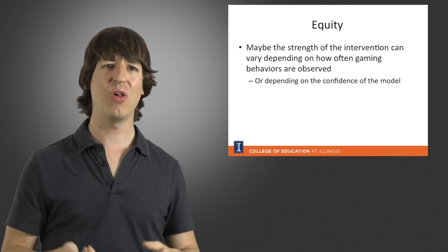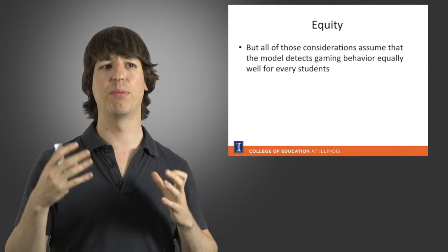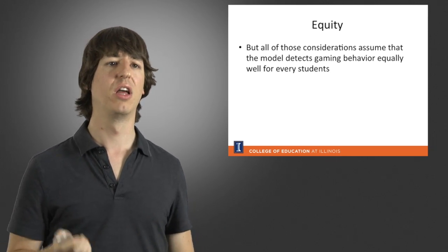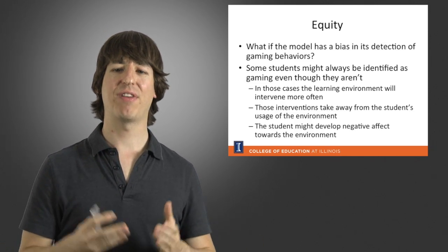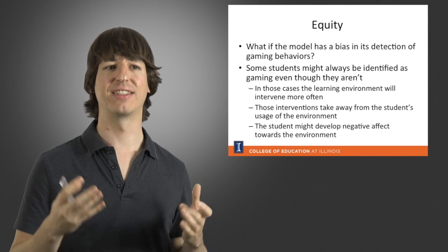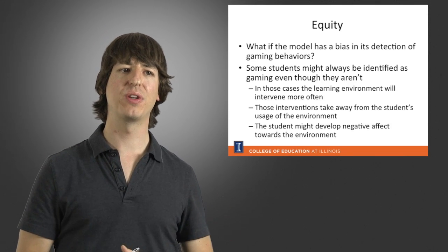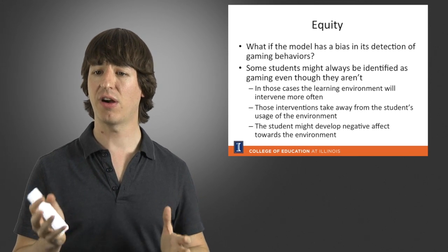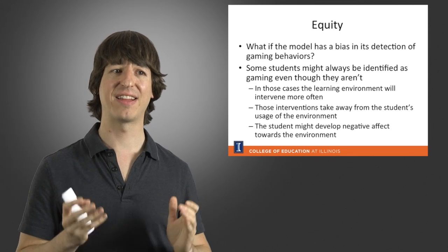But then, all of those considerations assume that the model detects gaming behavior equally well for every student. What would happen if our model actually has a bias in its detection of gaming behavior? Maybe some students might always be identified as gaming even though they aren't. And then, what will happen is that for those students,